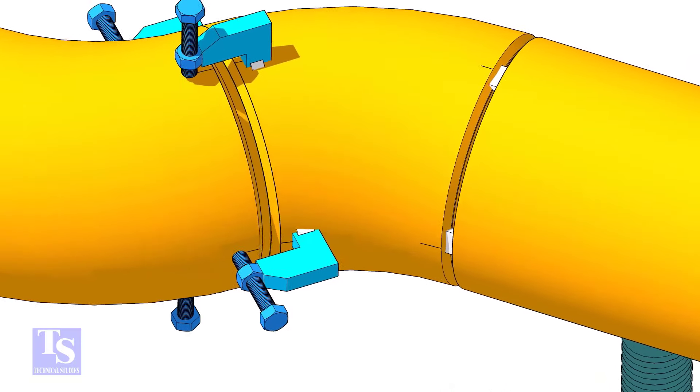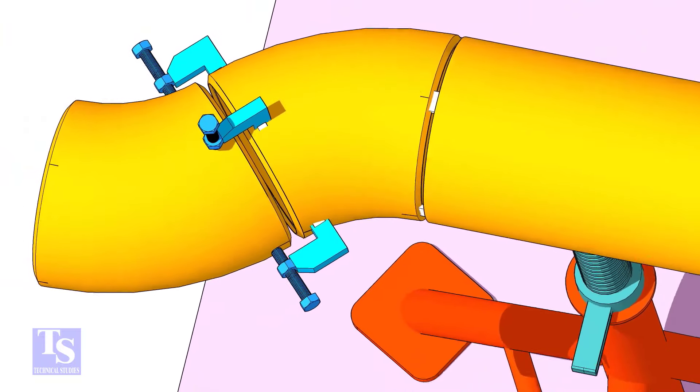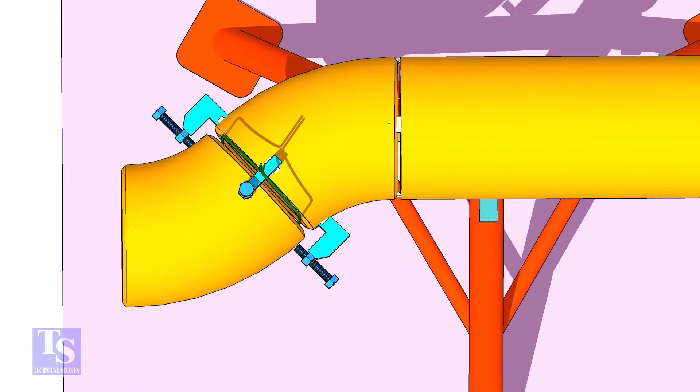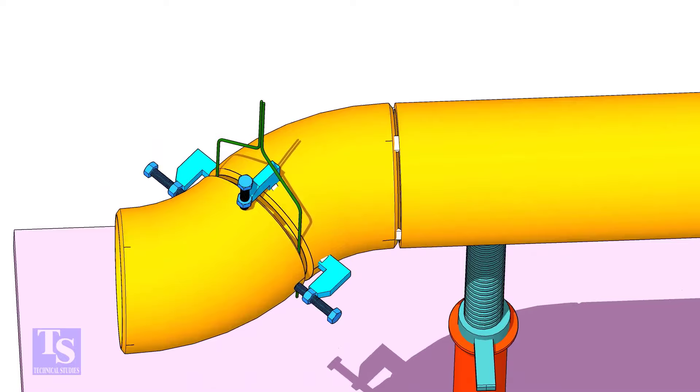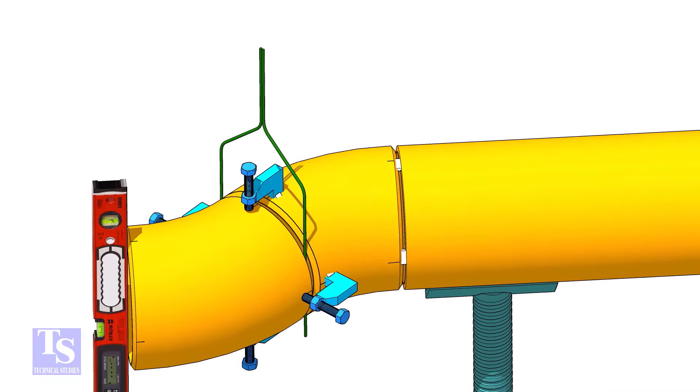Put the gap rod between the elbows and maintain the required gap. Check if the face is level.